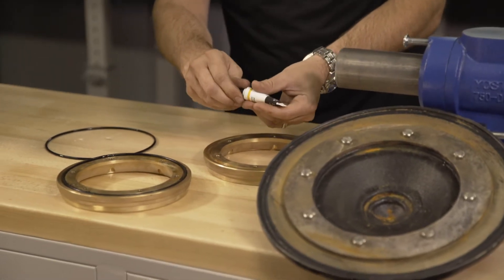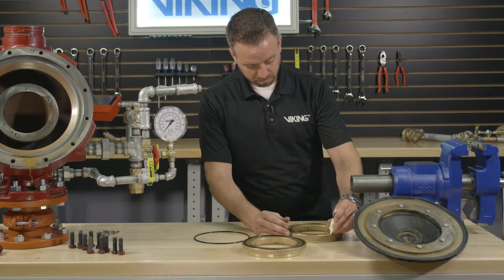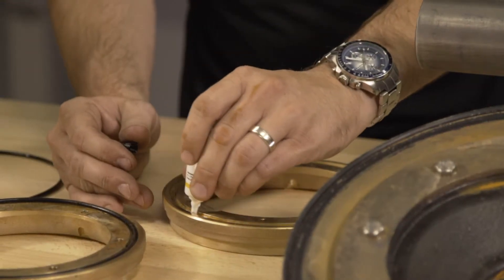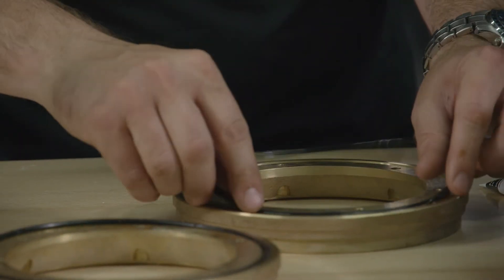To install the new seat, the O-ring lubricant will need to be applied to the groove in the bottom of the seat. Once the lubricant is applied, the O-ring can be installed into the groove of the seat.